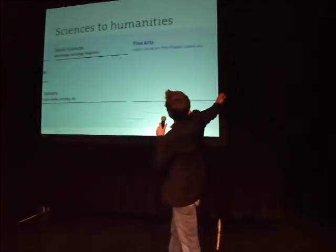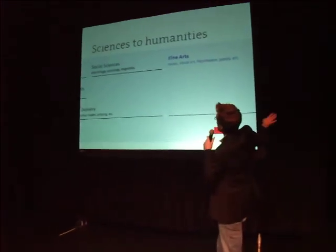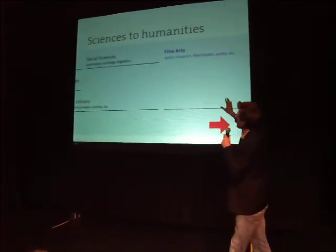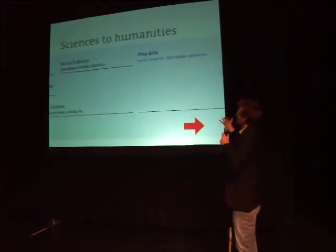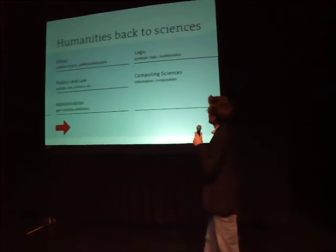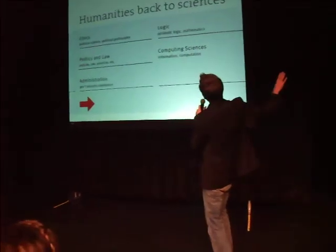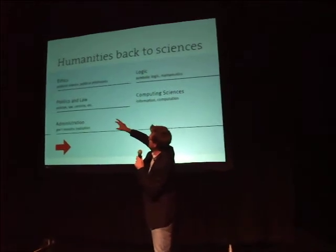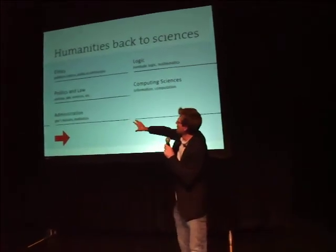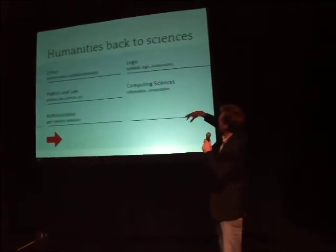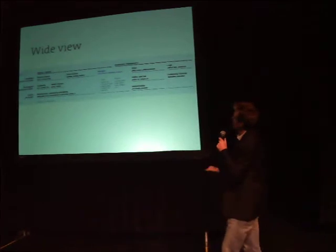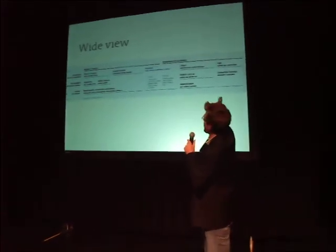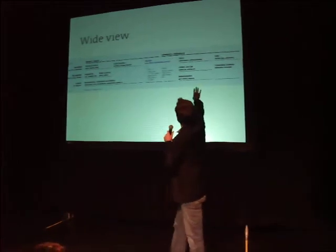Moving that map to the right — from the hard sciences over to the humanities — we then have the social sciences, sometimes called 'soft sciences,' as a transition to humanities. Then we have fine arts, which occupies a middle ground without a clear applied portion. Continuing further right, in the humanities we have ethics — the understanding — then the application: politics and law, and then administration as execution. Then there's logic, whose applied form is computing science. You can imagine this wraps around, since logic connects back to the physical sciences, moving from the material and physical to the immaterial and metaphysical.